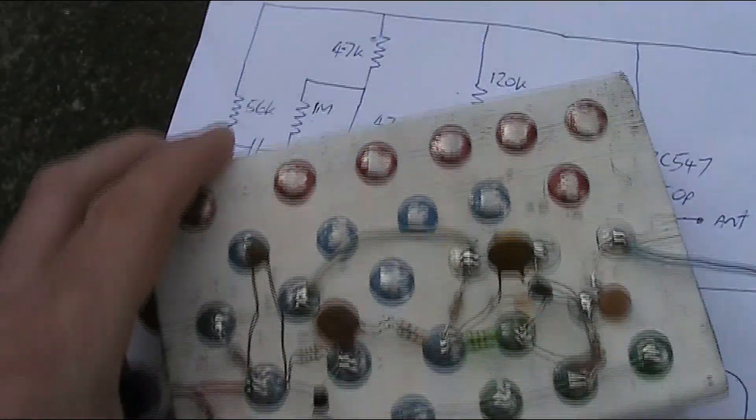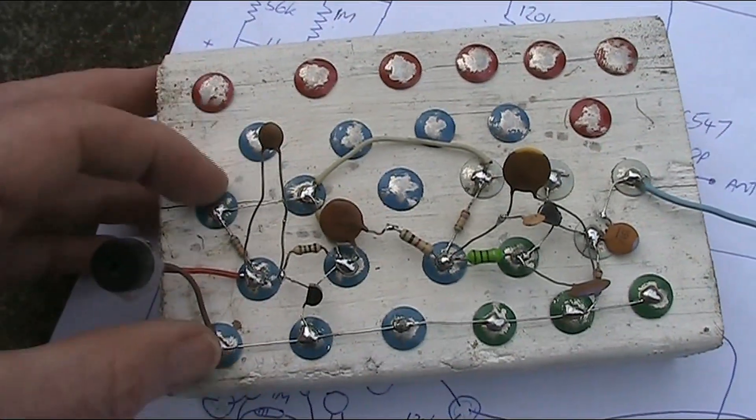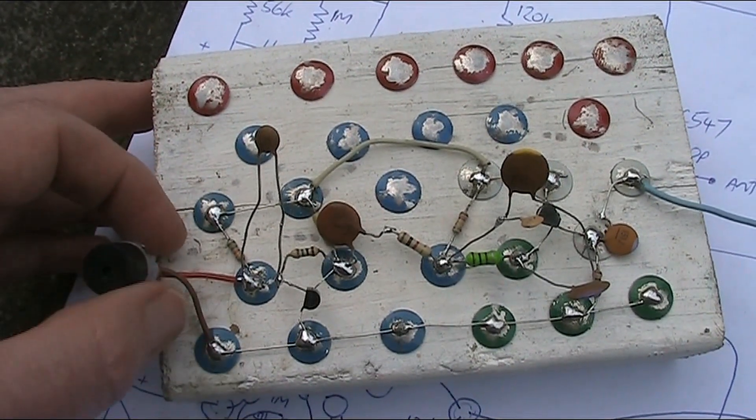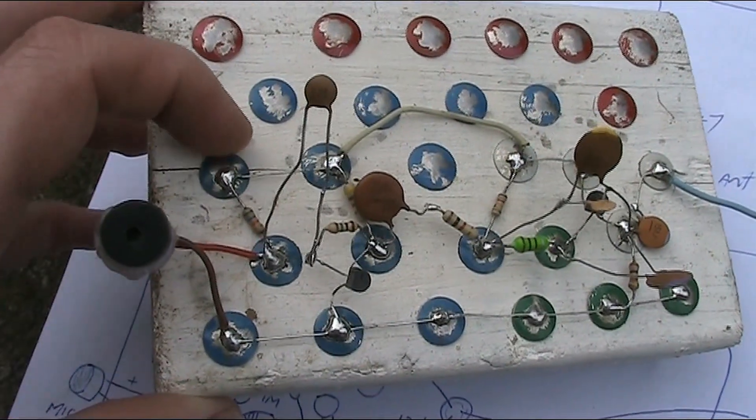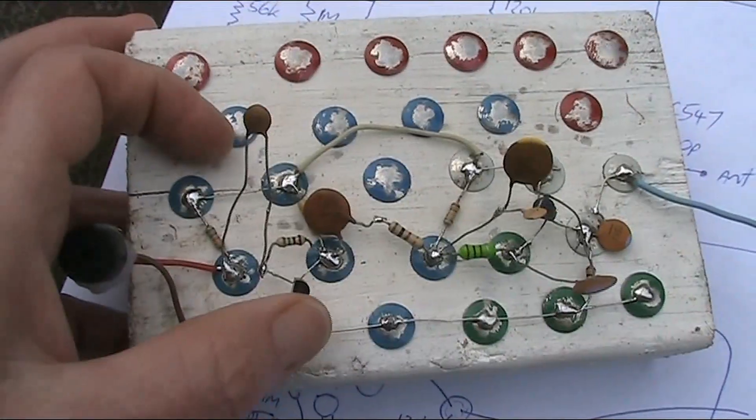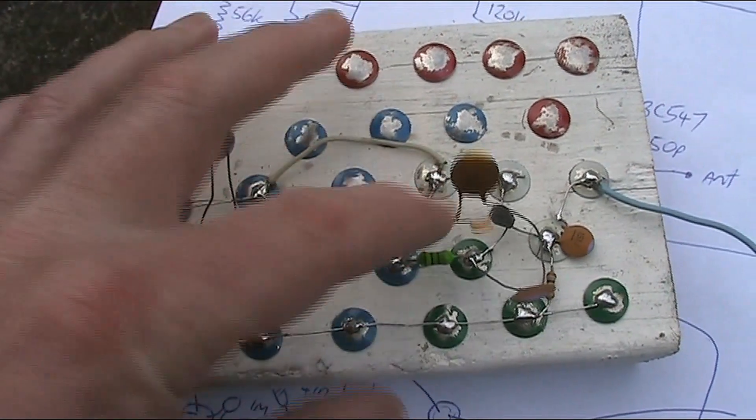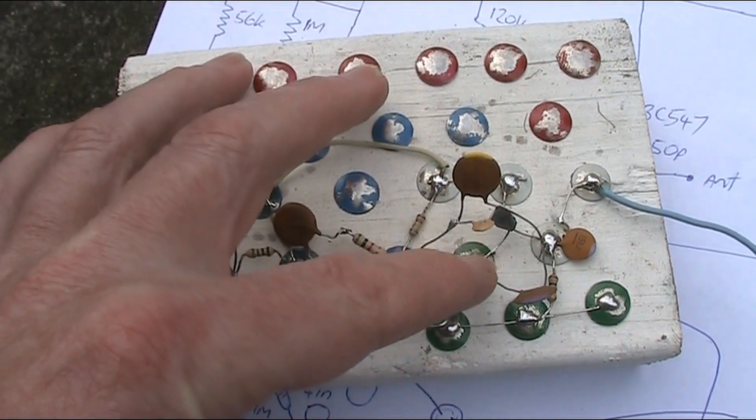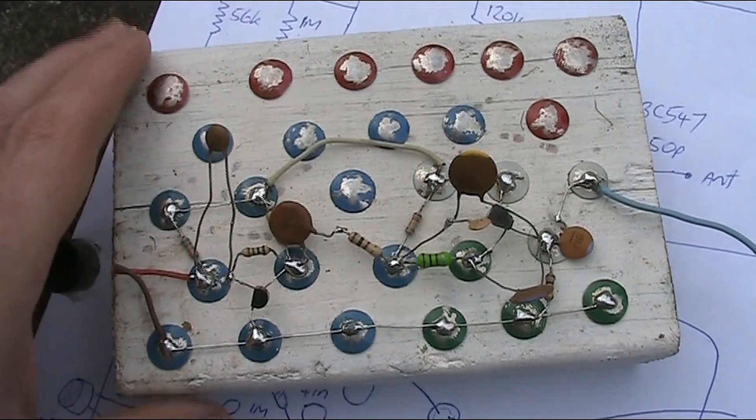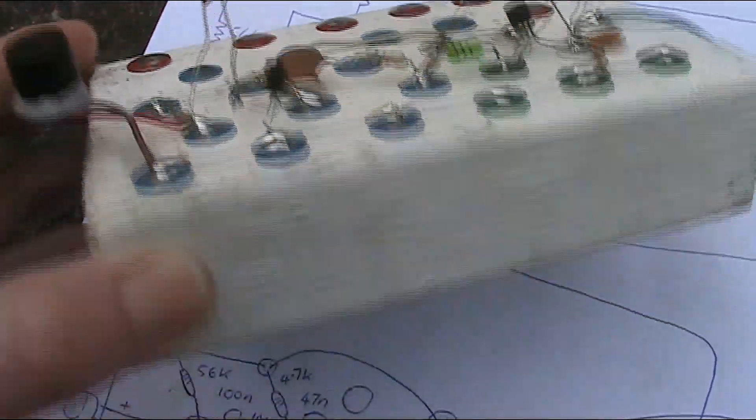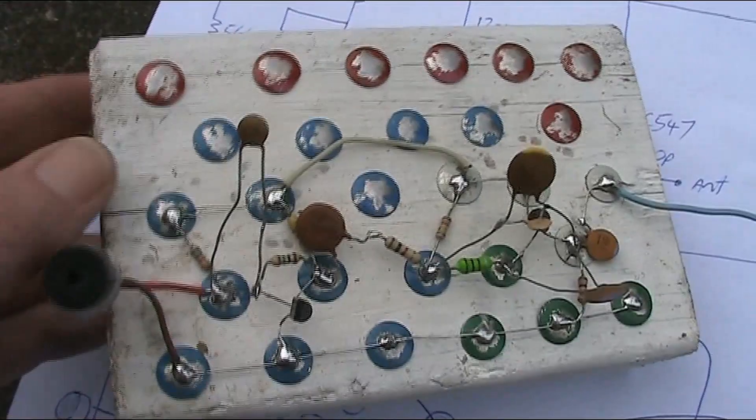Now if we have a look at the unit itself, the electric microphone, the audio amplifier stage, and the RF oscillator. As for the construction method, just a block of wood, drawing pins.